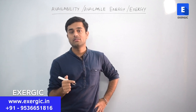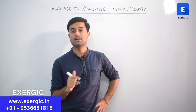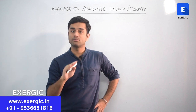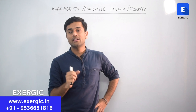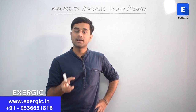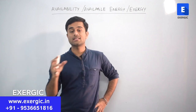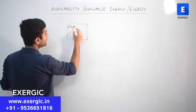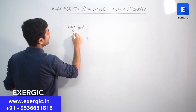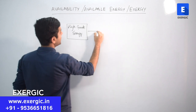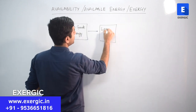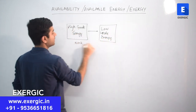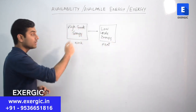But in the second law, we realize that both of them are not equivalent. We can completely convert work to heat, but we cannot completely convert heat to work. They are not equivalent although they are the same type. Work is a high grade energy — it is a more ordered, more oriented form of energy. High grade energy can be completely converted into low grade energy. Work is high grade energy; heat is low grade energy. Hence, work can be completely converted to heat.